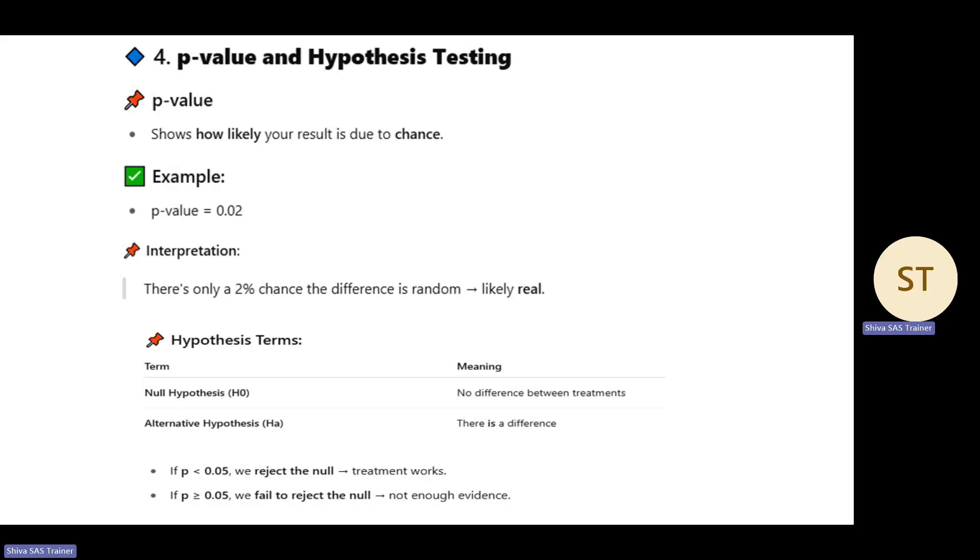The null hypothesis means no difference between treatments. Alternative hypothesis means there is a difference. If it's less than 0.05, that's the alternative hypothesis. If it's greater than 0.05, it's the null hypothesis. If it's less than 0.05, we reject the null hypothesis. In the same way, with alternative hypothesis, if we fail to reject the null hypothesis, that means it's the null hypothesis.